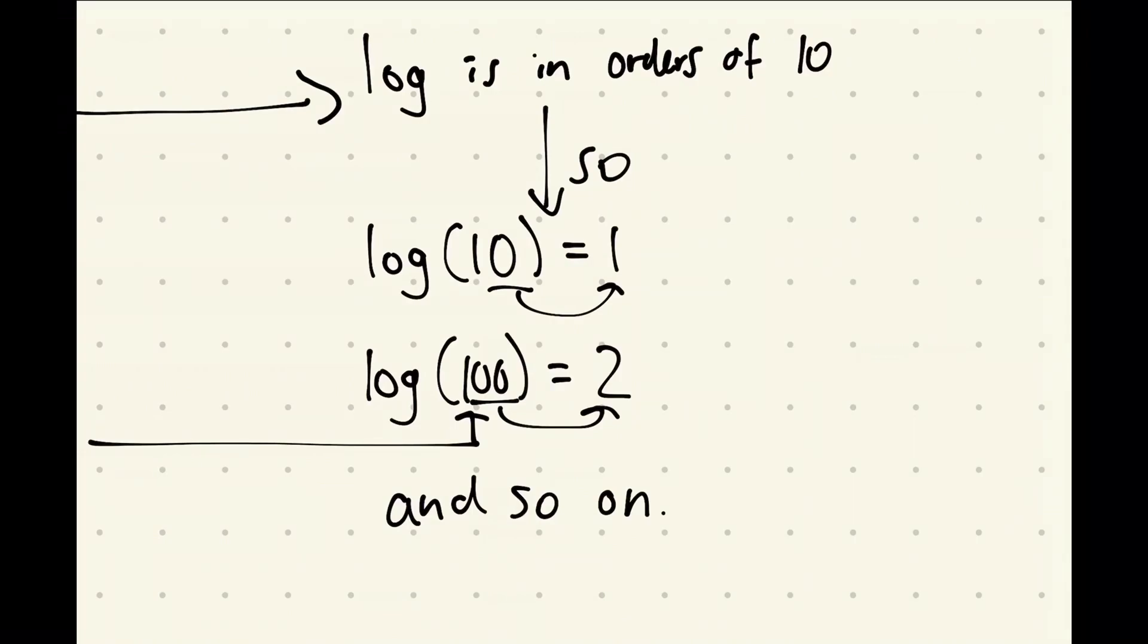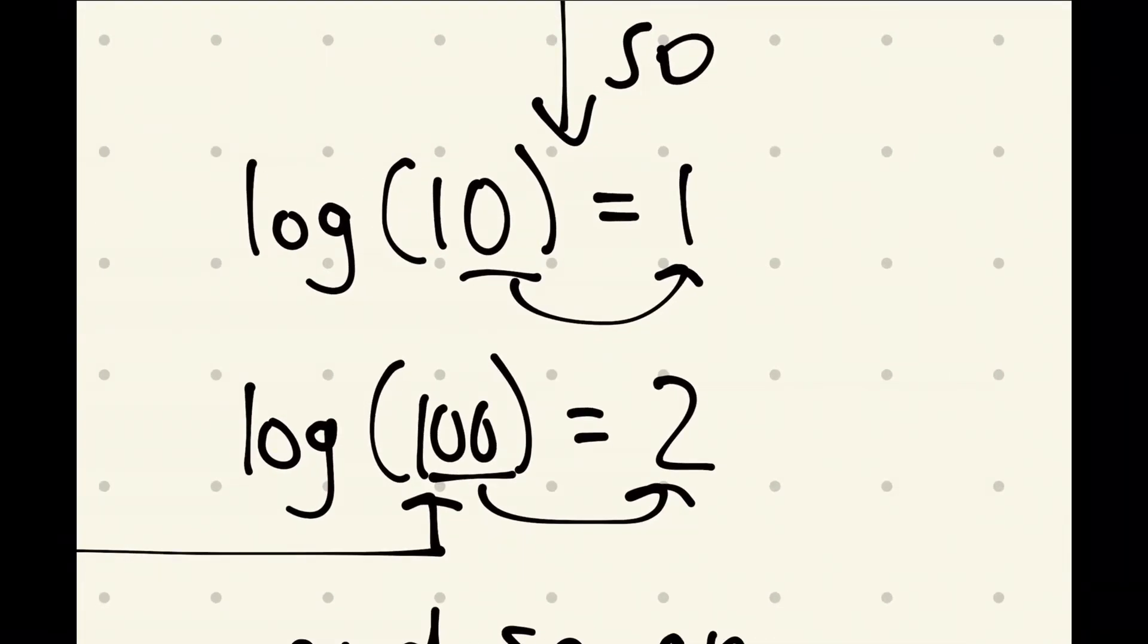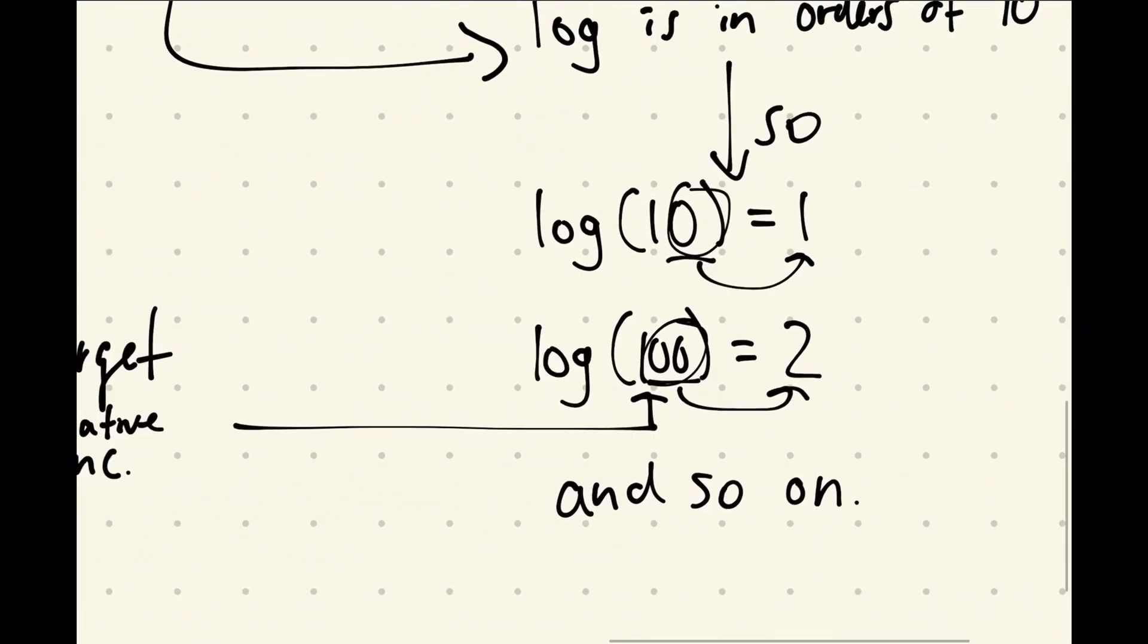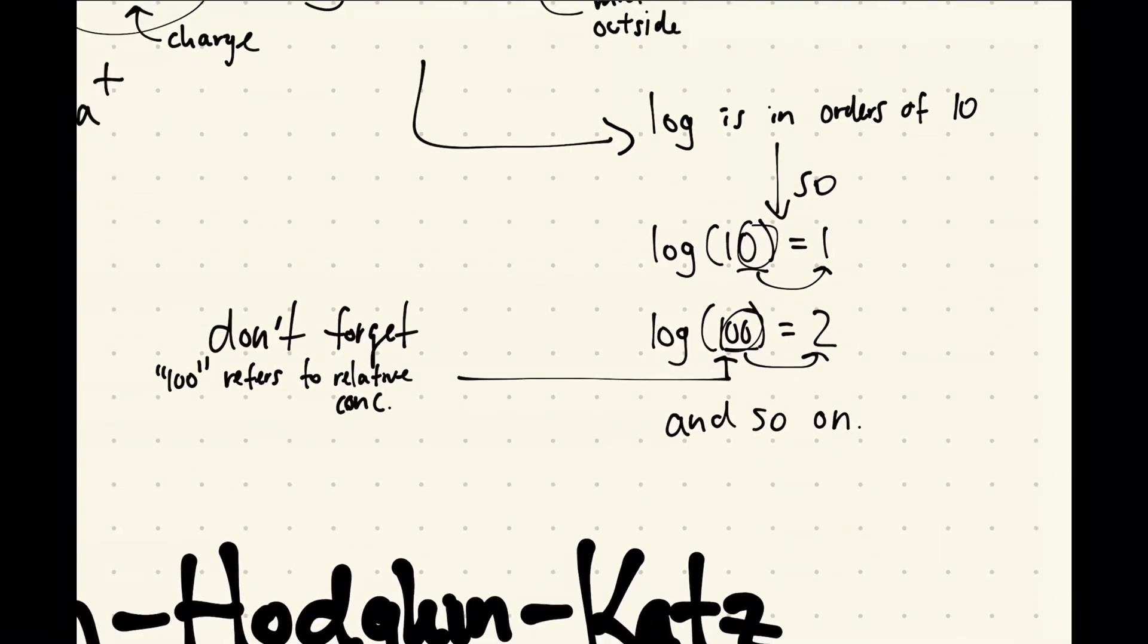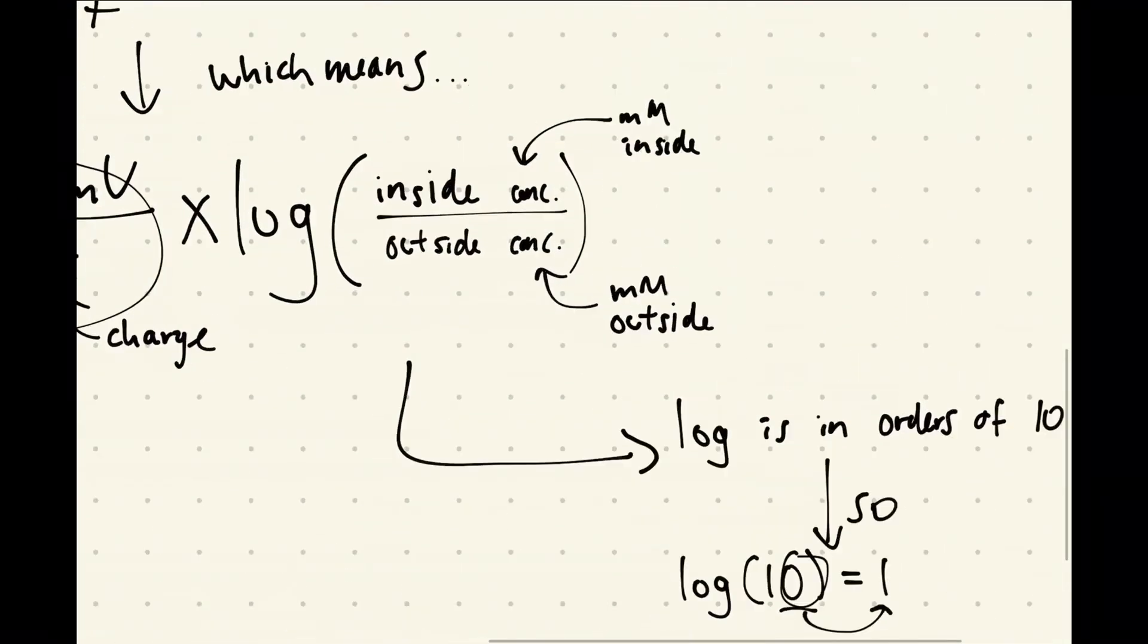So if you're looking at right here, 10, it's going to equal 1. And then log of 100 equals 2 because there's two zeros—one zero, two zeros, right?